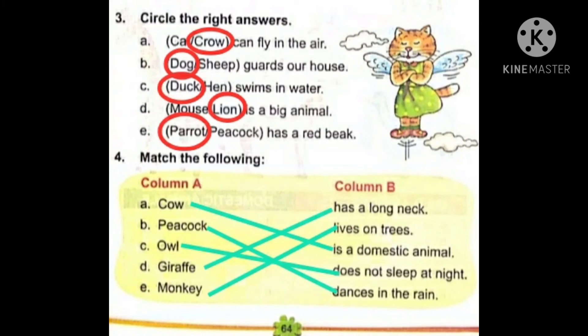Number C: owl — ullu jo hota hai, woh raat ke samay nahi sota hai. So owl does not sleep at night. Number D: giraffe — aap sab ne dekha hoga, giraffe ki neck bahut long hoti hai. So giraffe has a long neck. Last one is monkey — monkey kahan par rehte hain? Ped par rehte hain. So we will match monkey with 'lives on trees.' Monkey lives on trees.